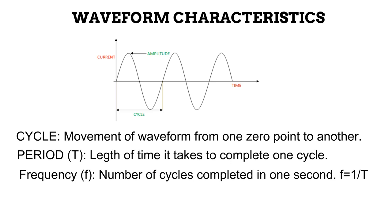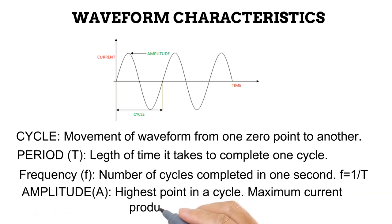Now, f is the reciprocal of T meaning, to get f, you say 1 divided by T. This means that T is also the reciprocal of f, and so, to get T, you say 1 divided by f. Now, amplitude is the highest point in a cycle, it represents the maximum current or voltage produced in a cycle.